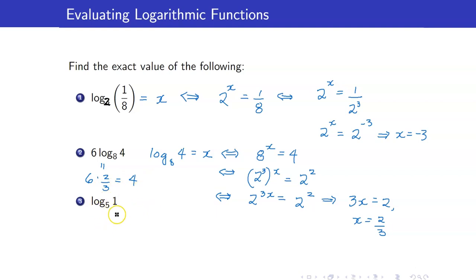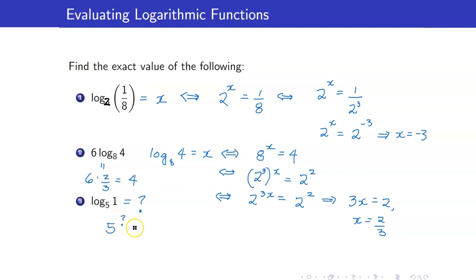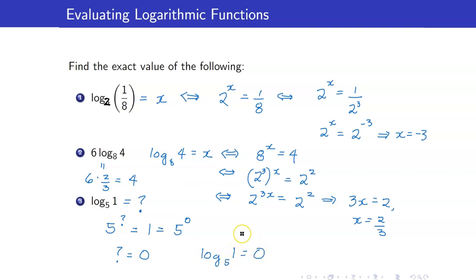For the last expression, log of 1 base 5, you can just think of it mentally. What is the exponent needed by 5 to get 1? This means 5 raised to some value equals 1. But 1 is 5 raised to 0. Therefore the answer is 0, so logarithm of 1 to the base 5 is equal to 0.